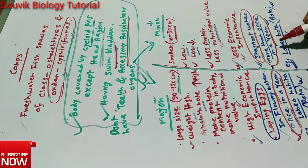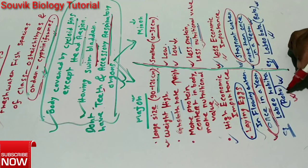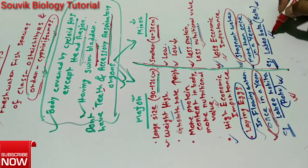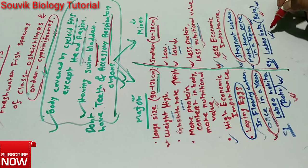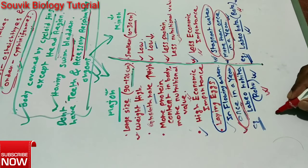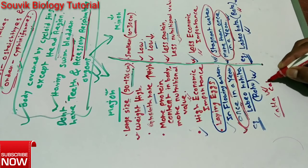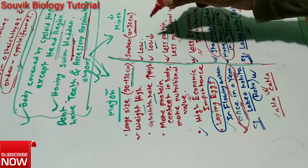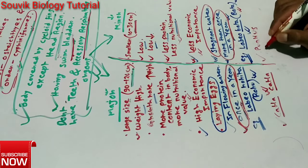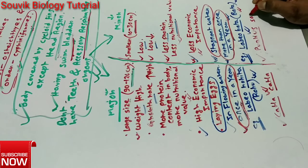Examples of major carps: Labeo rohita, common name rohu; and Katla katla, common name katla. Examples of minor carps: Labeo bata, common name bata; and Puntius sarana, common name olive barb.